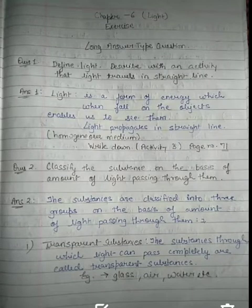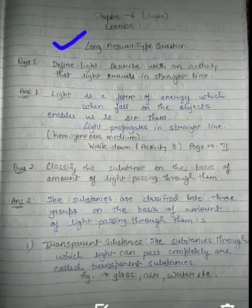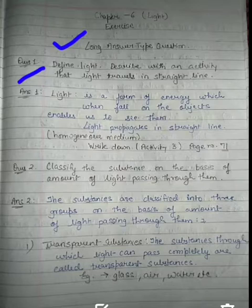So let us begin. Students, in the long answer type question of chapter 6, the very first question is: define light and describe with an activity that light travels in a straight line. So students, first of all we have to define light and then we have to describe an activity in which we know that light travels in a straight line.